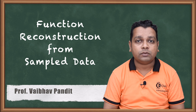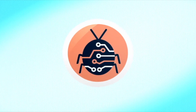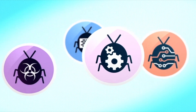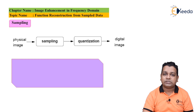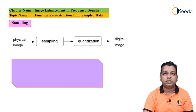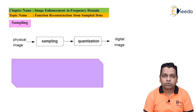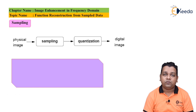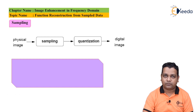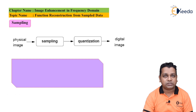Let us see the details of how exactly function reconstruction from sampled data can be done. Sampling is a very important step in converting a physical image into a digital image. Whenever we obtain information in image form, it is two-dimensional, continuous information — hence called a physical image. Through sampling and further quantization, we convert it into digital form, which has advantages for storage and transmission.